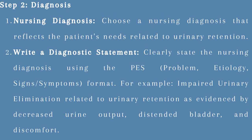Step 2: Diagnosis. Choose a nursing diagnosis that reflects the patient's needs related to urinary retention — for example, impaired urinary elimination related to urinary retention and bladder distension, acute pain related to bladder distension and discomfort, or risk for infection related to urinary stasis and catheterization. Write a diagnostic statement using the PES (problem, etiology, signs/symptoms) format, for example: impaired urinary elimination related to urinary retention as evidenced by decreased urine output, distended bladder, and discomfort.